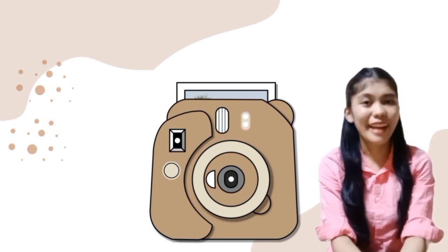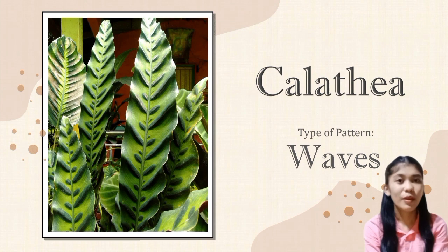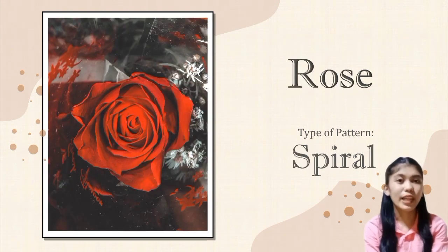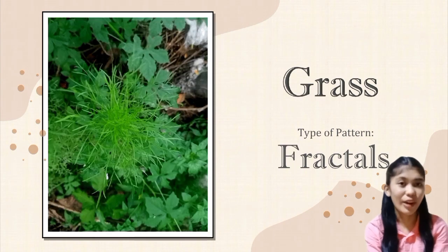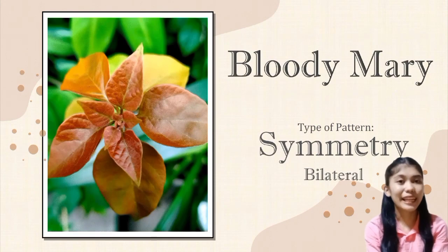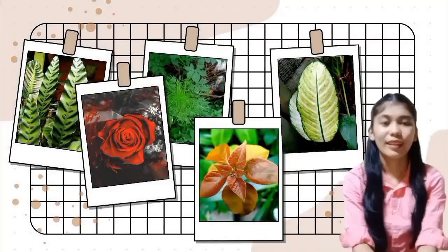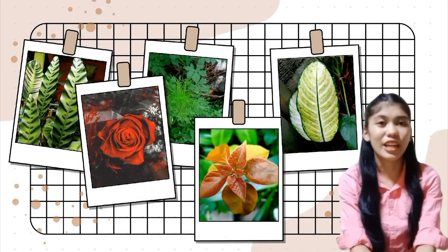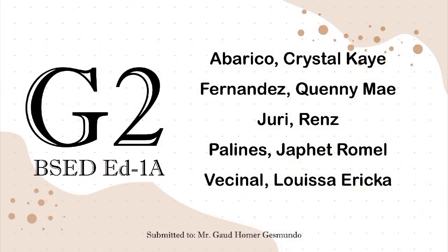And for our final five nature pattern groupie, we have the calatea, which has a wave pattern; a rose with a Fibonacci spiral pattern; a grass with a fractals pattern; and a bloody mary as well as a la suerte plant, both of which have bilateral symmetry patterns. And that's all for our nature pattern groupie. Thank you for listening.